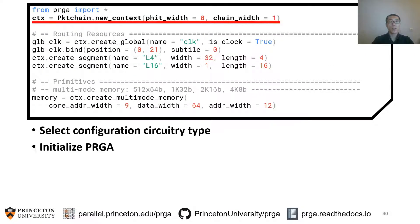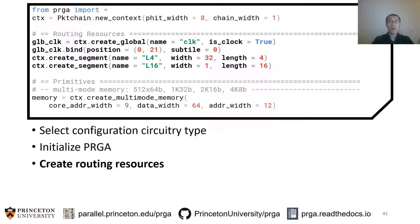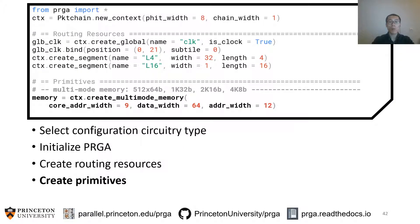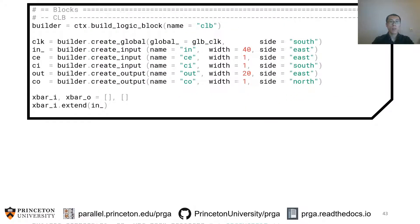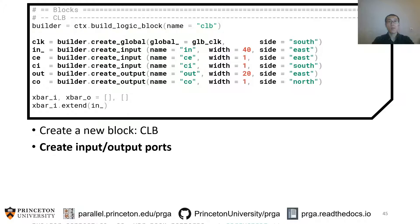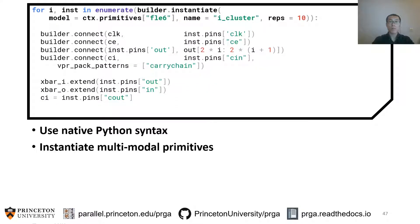At the beginning of the script, we select the configuration circuitry type and initialize PRGA. We create the routing resources, including a global clock and two types of routing tracks. Then we create a multimodal memory primitive — all the necessary multiplexing logic and mode selection logic are included in this one-line statement. Next, we create the CLB, and we have full control over the inputs and outputs of the block. We then instantiate 10 multimodal LUT6s in the CLB. The great thing about using a high-level programming language like Python is that you have access to all native programming syntax like loops, arrays, and dictionaries.